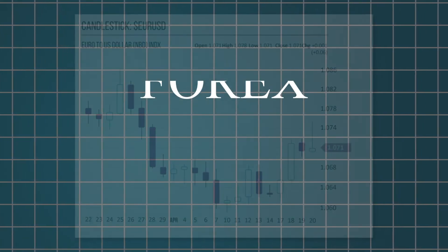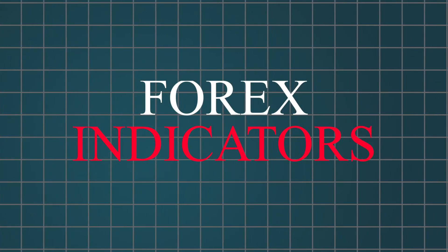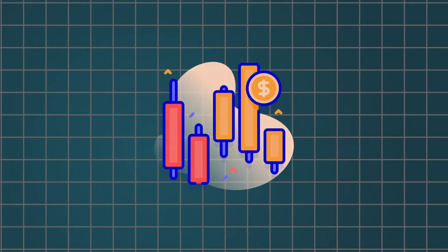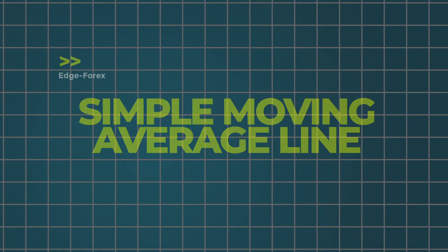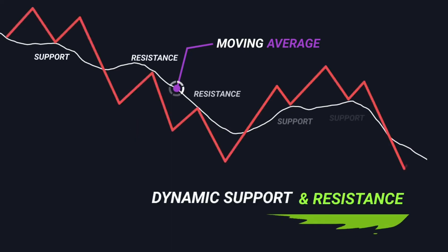Now, let's talk about Forex indicators, the tools that help traders make sense of Forex charts. The most common indicator is the simple moving average line. It's calculated by adding up the closing prices of a set period and dividing by the time within that period. For instance, a 5-hour SMA is calculated by adding 5 closing prices and dividing by 5.